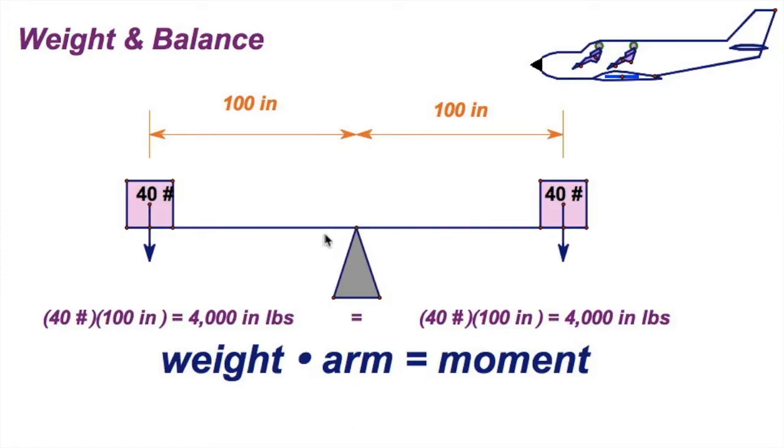I've got a picture right here. I've got a balance beam and a point we call the fulcrum. I've got a pair of weights on either side, both 40 pounds, balancing. They're each 100 inches from the fulcrum. The weight is 40 pounds, and the arm is the distance from the fulcrum, in this case 100 inches. 40 times 100 is 4,000. So the moment on either side, left or right, is 4,000 inch pounds.